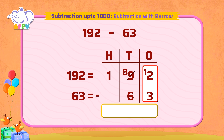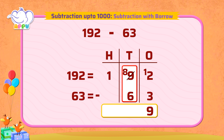Now we can easily subtract three from 12, which gives nine in the ones place. Since we borrowed the one from nine, the nine has become eight. So when we subtract six from eight, we get two in the tens place.